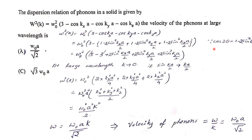Using the identity cos(2θ) = 1 − 2sin²(θ), we write cos(kx·a) = 1 − 2sin²(kx·a/2), and similarly for the other components. Substituting, ω² = ω₀²[2sin²(kx·a/2) + 2sin²(ky·a/2) + 2sin²(kz·a/2)]. At large wavelength, k tends to 0.